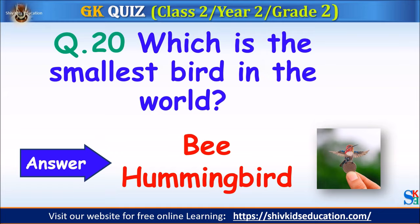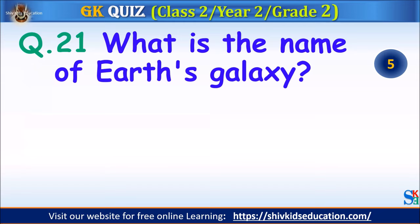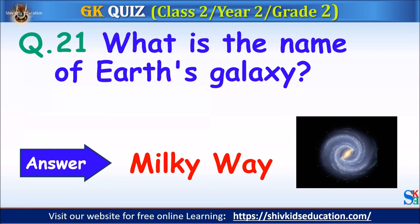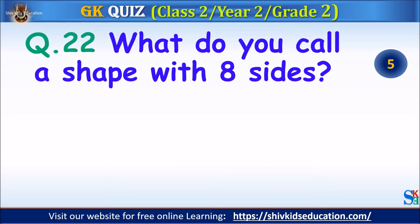Question 21: What is the name of Earth's galaxy? Your time starts. The answer is Milky Way. Question 22: What do you call a shape with eight sides? Your time starts. The answer is octagon.